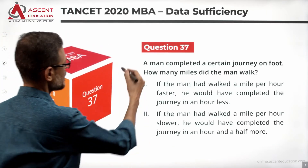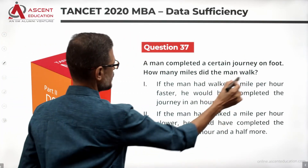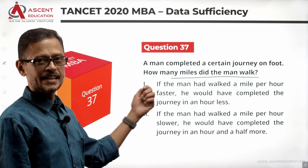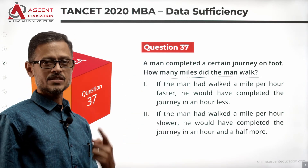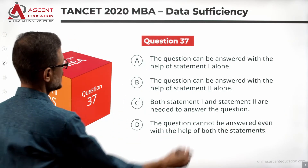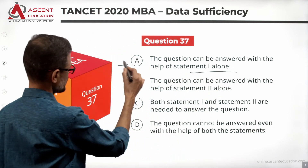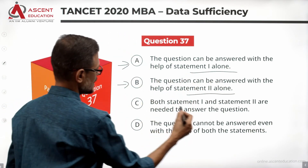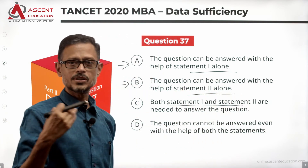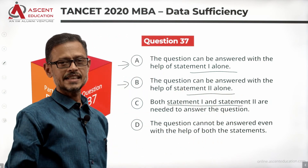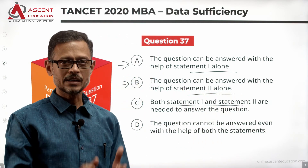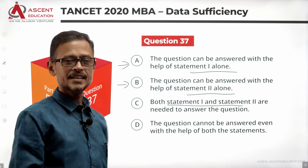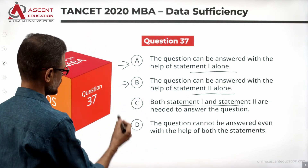What is the question? A man completed a journey on foot. How many miles did the man walk? There are statements. Before we look at the statements, let's look at the four answer options. Statement 1 alone is sufficient — answer option A. Statement 2 alone is sufficient — answer option B. If both statements together give the answer — option C. If combined data is not sufficient — answer option D.